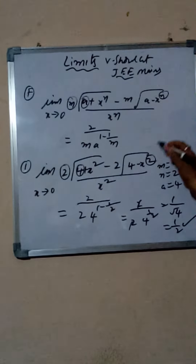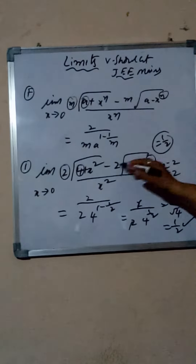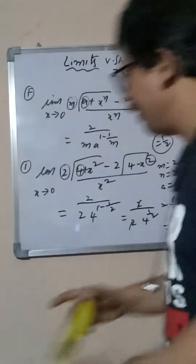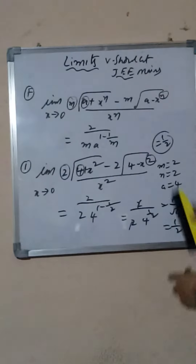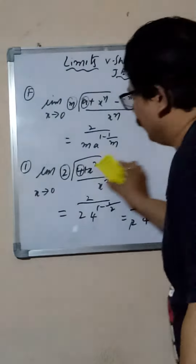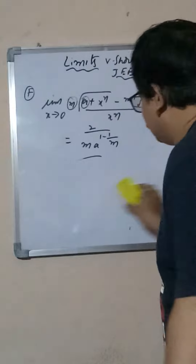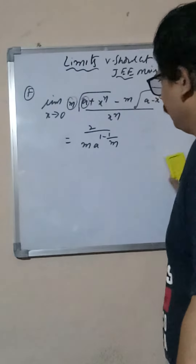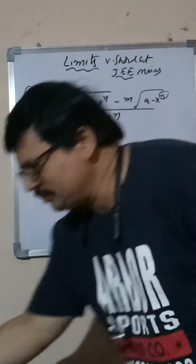The answer is 1 by 2. Very easy! Next, one more sum — same model. Just remember the formula and that's enough. Listen carefully to the second question.